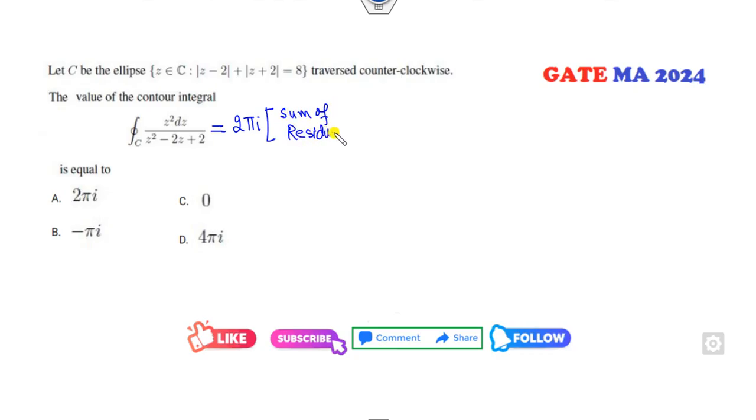How you can think about that: 2πi times the sum of the residues. To find the residue, I can find the pole. The pole is zero, so that means z will be 2 plus minus √(4-8) over 2.